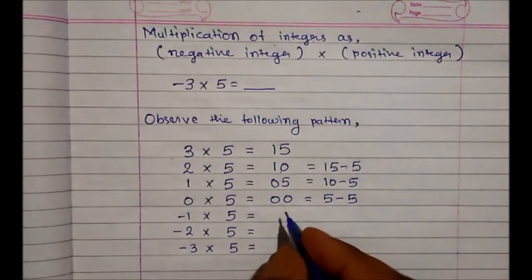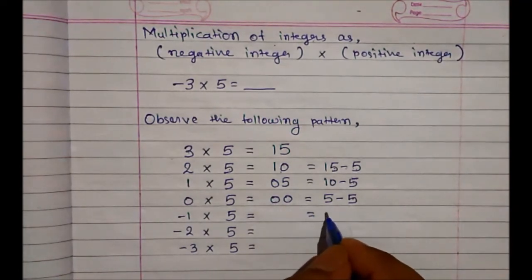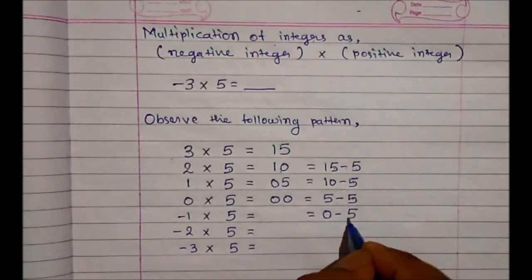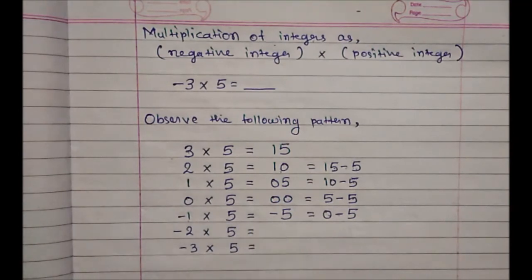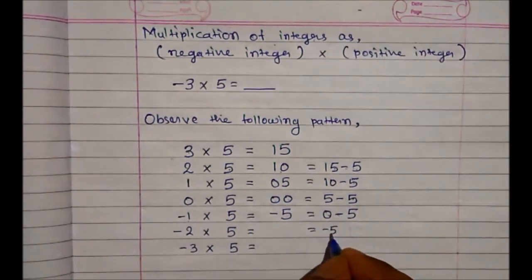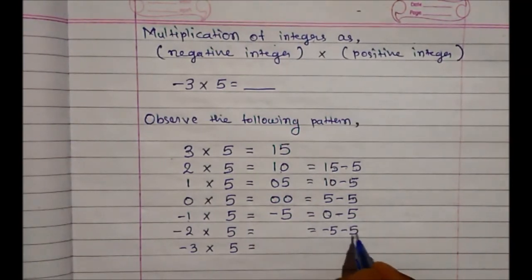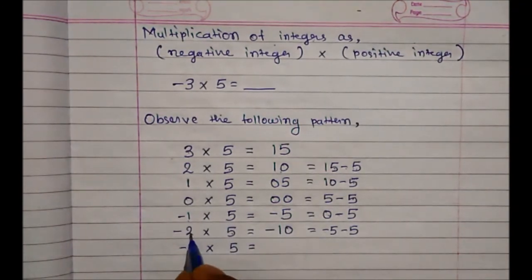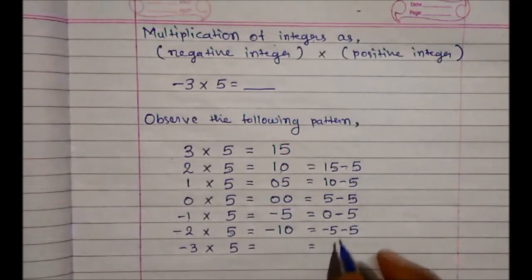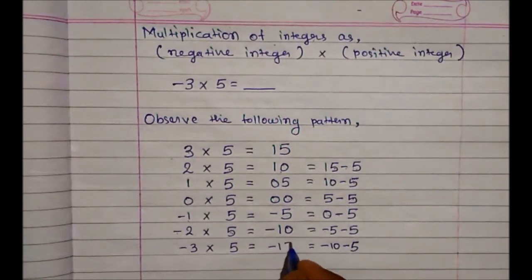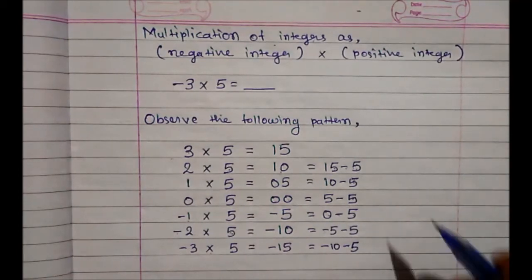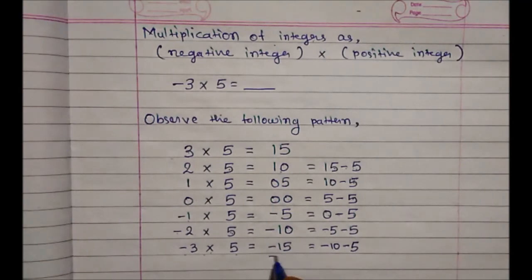Continuing the same pattern: 0 into 5 is 0, so reducing 5 from 0 gives minus 5. Therefore minus 1 into 5 is minus 5. Reducing another 5 from minus 5 — both are negative so we add with a minus sign — gives minus 10. So minus 2 into 5 is minus 10. Reducing one more 5 gives minus 15. So minus 3 into 5 is nothing but minus 15.